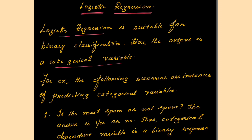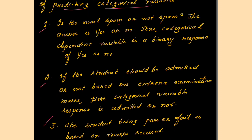Here the output is a categorical variable. When we say categorical values, that means a binary response — for example, is an email spam or not spam? The answer is yes or no. The categorical dependent variable is a binary response of yes or no.